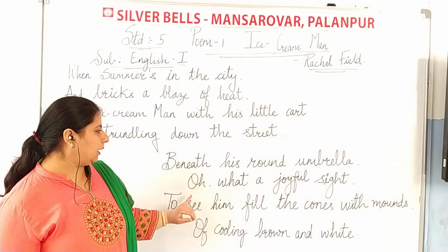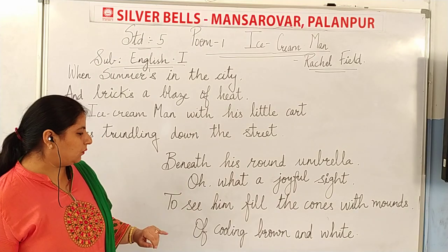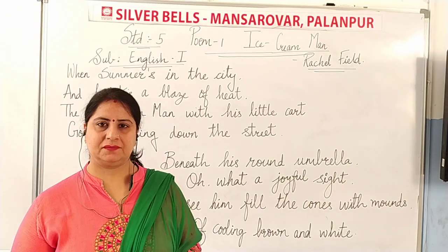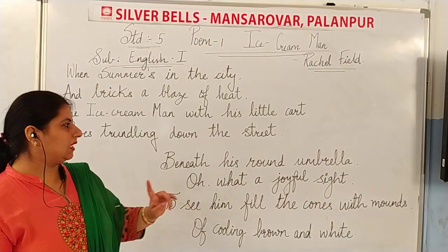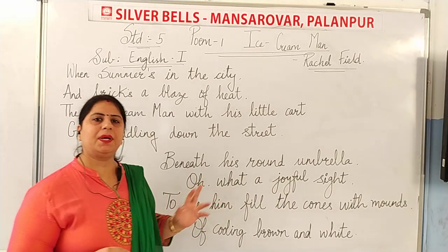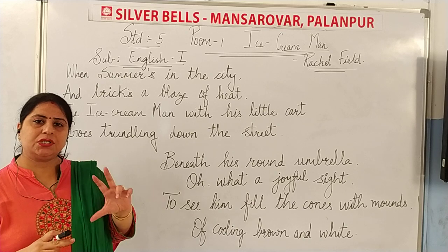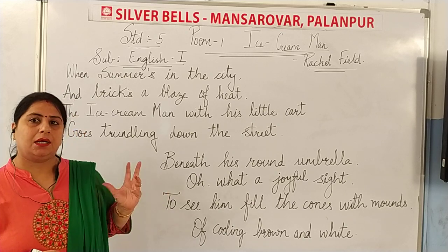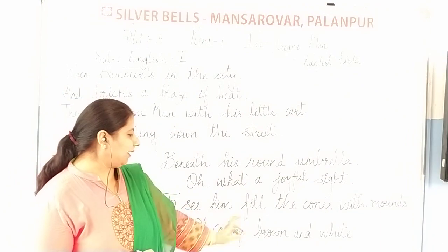Beneath his round umbrella, what a joyful sight, to see him fill the cones with mounds of cooling brown and white. The ice cream man takes his small cart where he has an umbrella. We are very happy to see that he is filling the ice cream cones. Mounds means heaps, in brown and white colour.